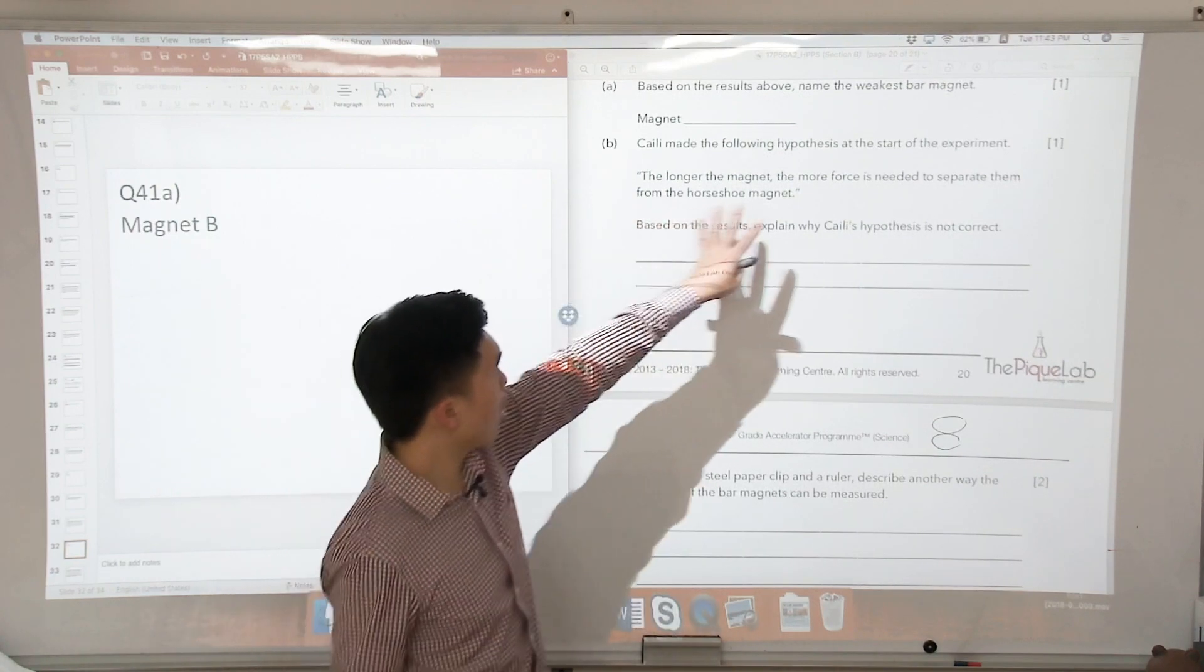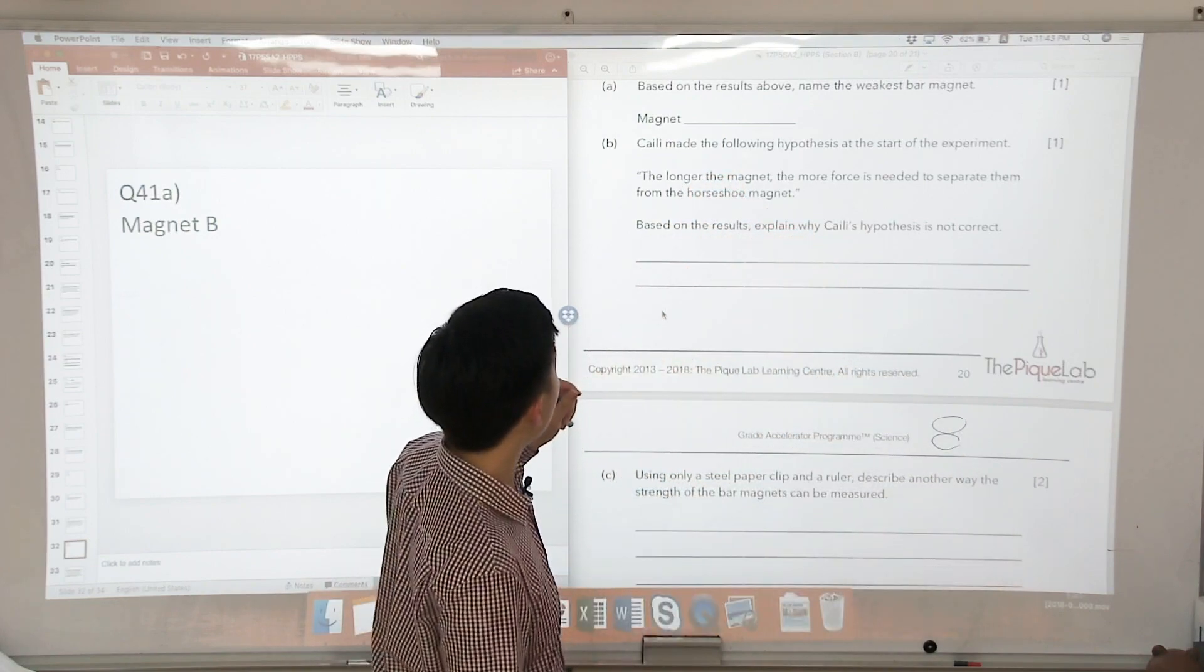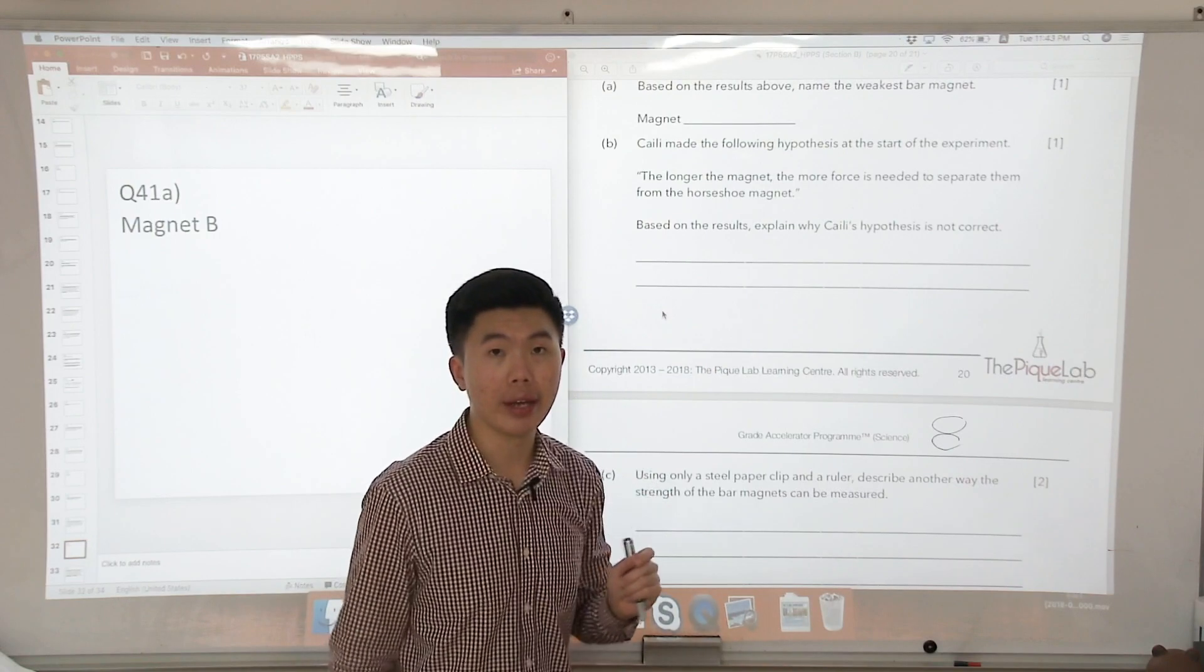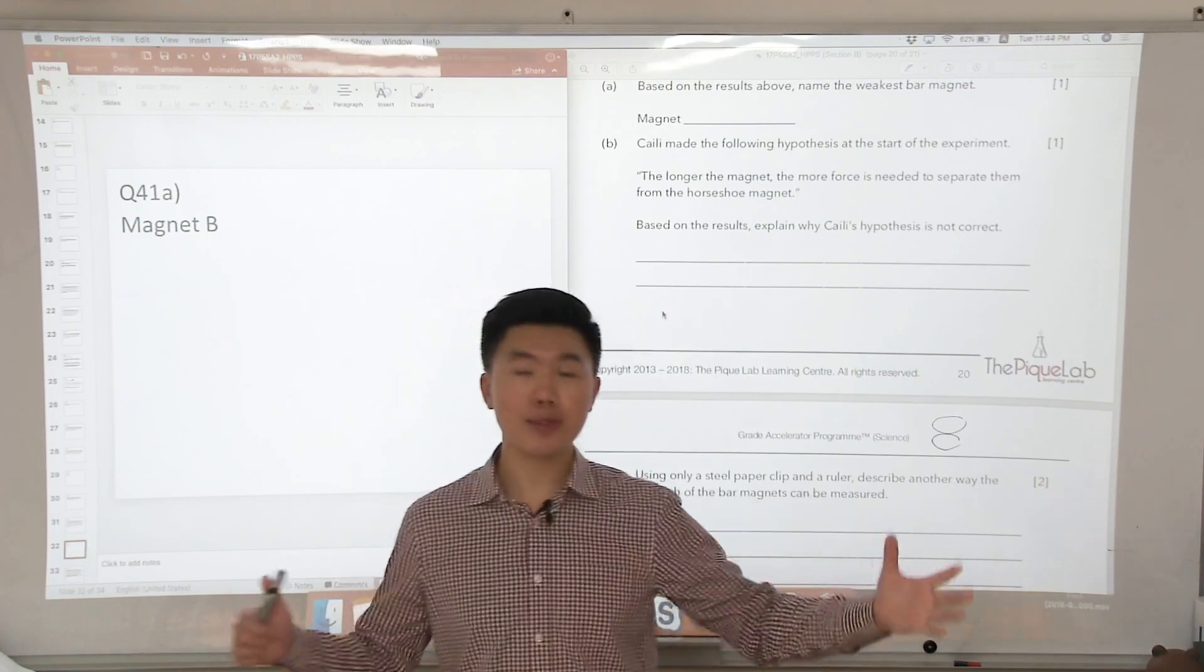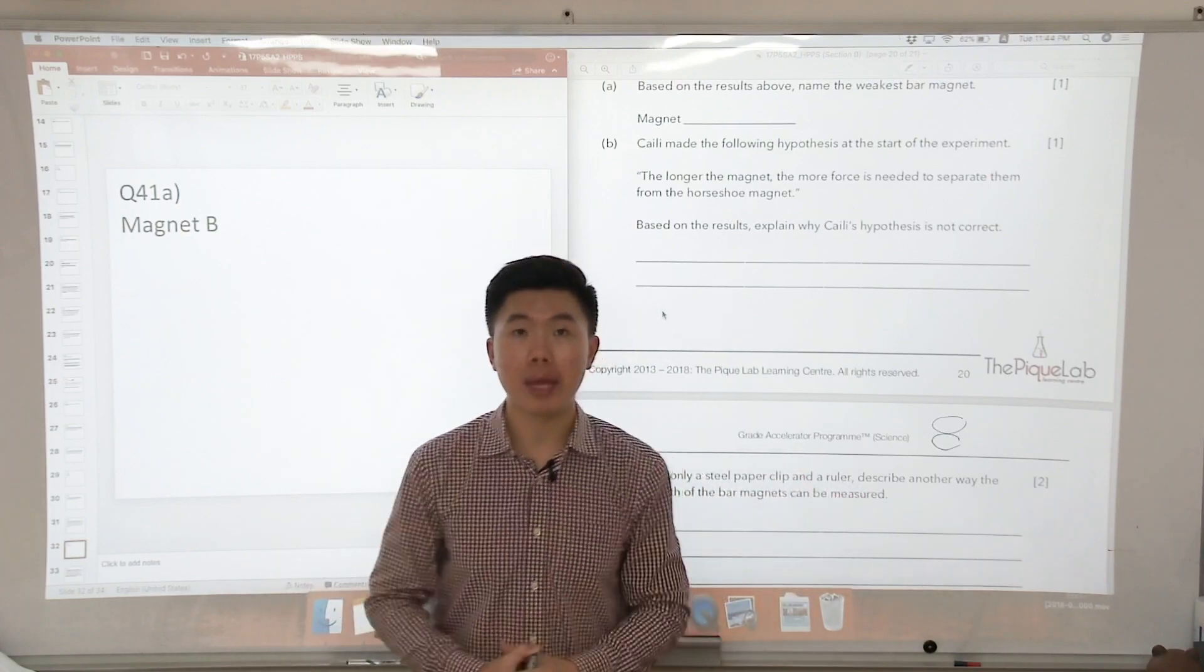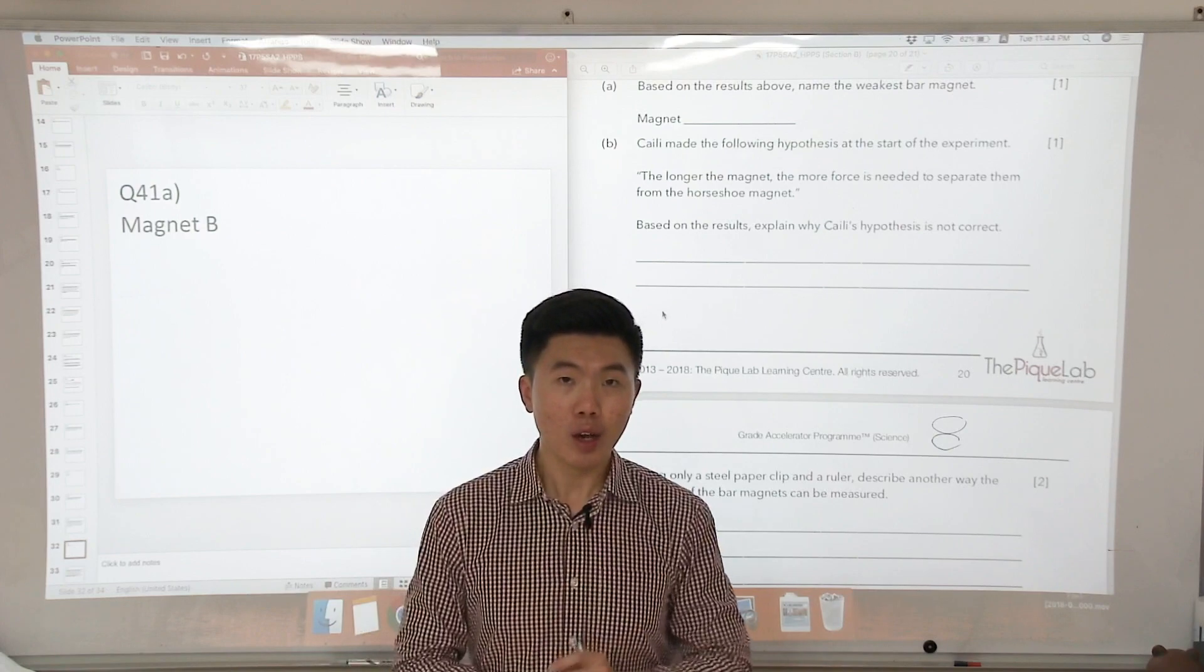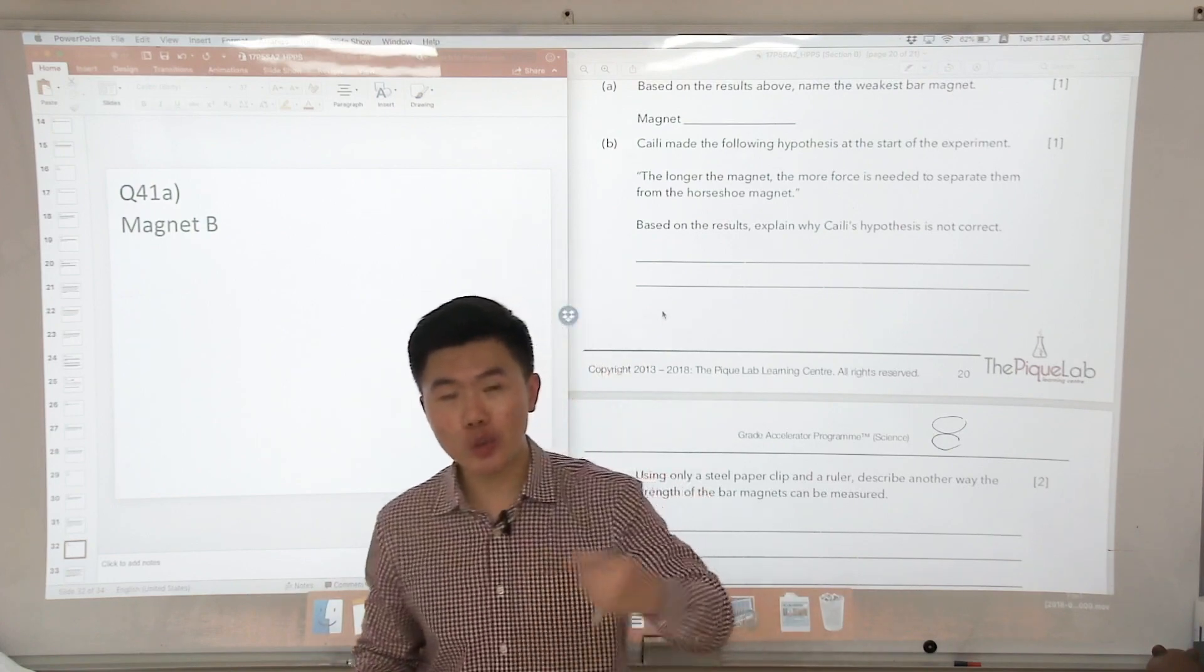Kylie said that the longer the bar magnet, the more force is needed to separate them from the horseshoe magnet. Now if you think about this common sense wise, we know that the length or the size of the bar magnet is not going to affect the strength of the magnet. Why do I say that? How do we increase the strength of a magnet?